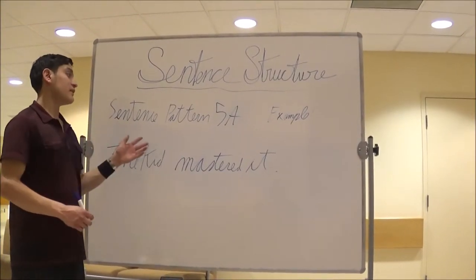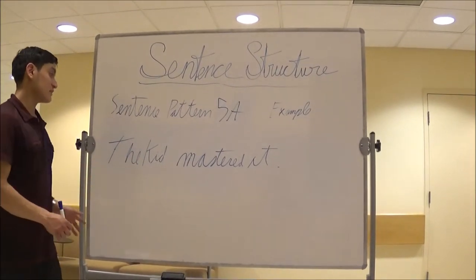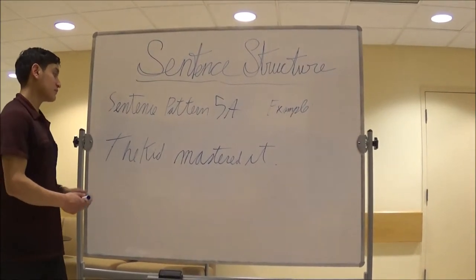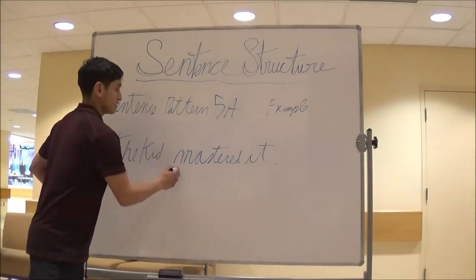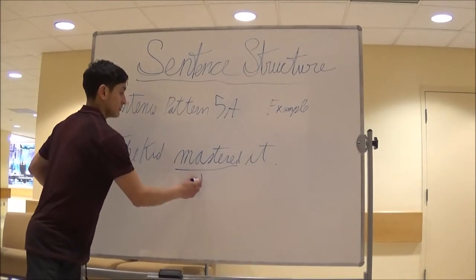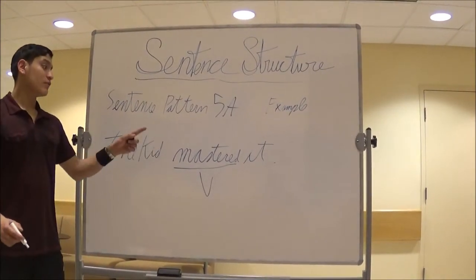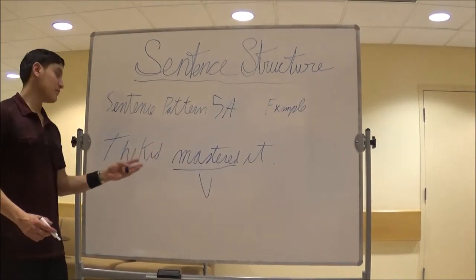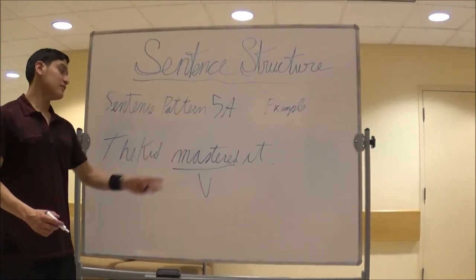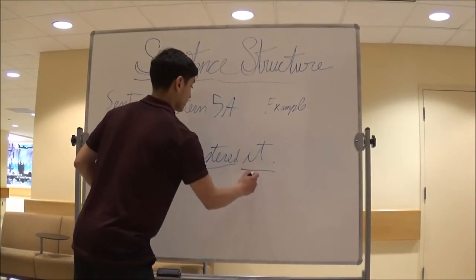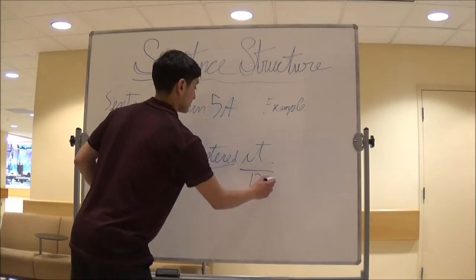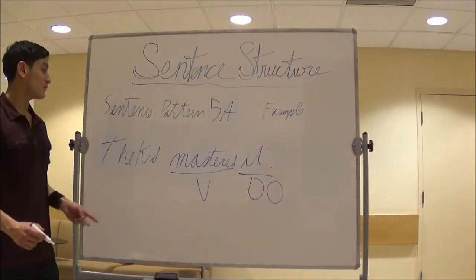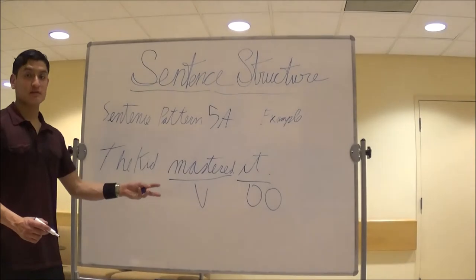Sentence pattern 5a. The example is: the kid mastered it. Kid is the subject, mastered is the verb, and 'it' is here. The kid mastered it — mastered 'it' makes it a direct object. Unlike intransitive verbs, once we have a direct object, it becomes a transitive verb.